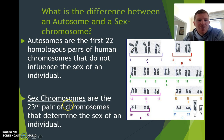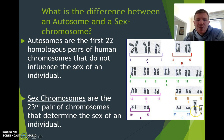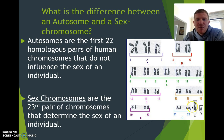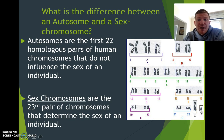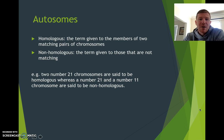The sex chromosomes are, in humans, the 23rd pair, and they determine the gender. So if you've got, in this case, an X and a Y, this is going to be a male. If it's an X and an X, it determines females.